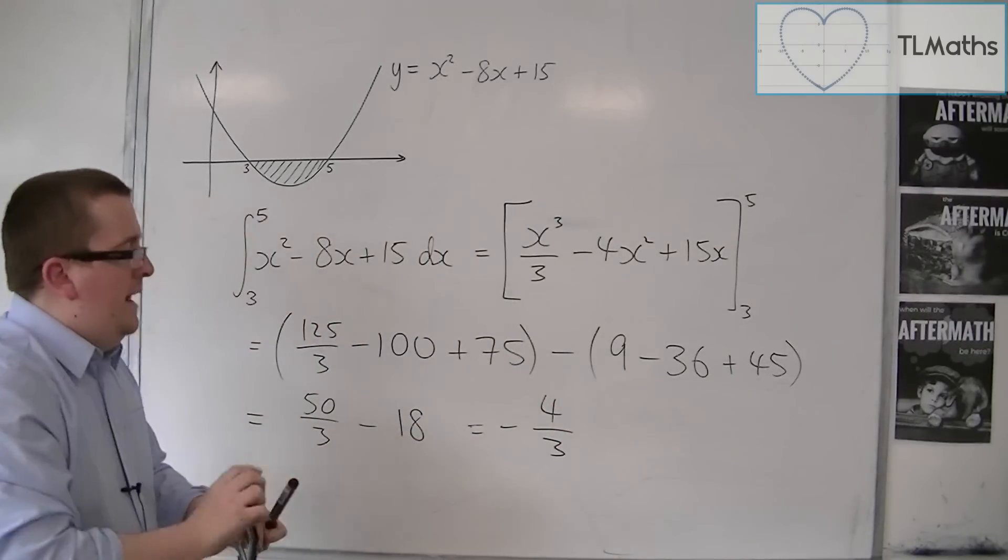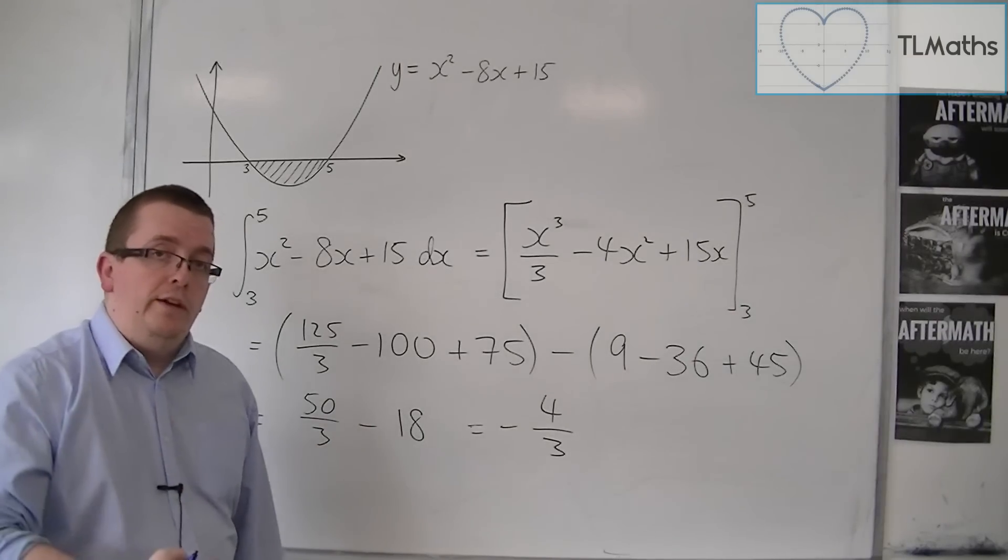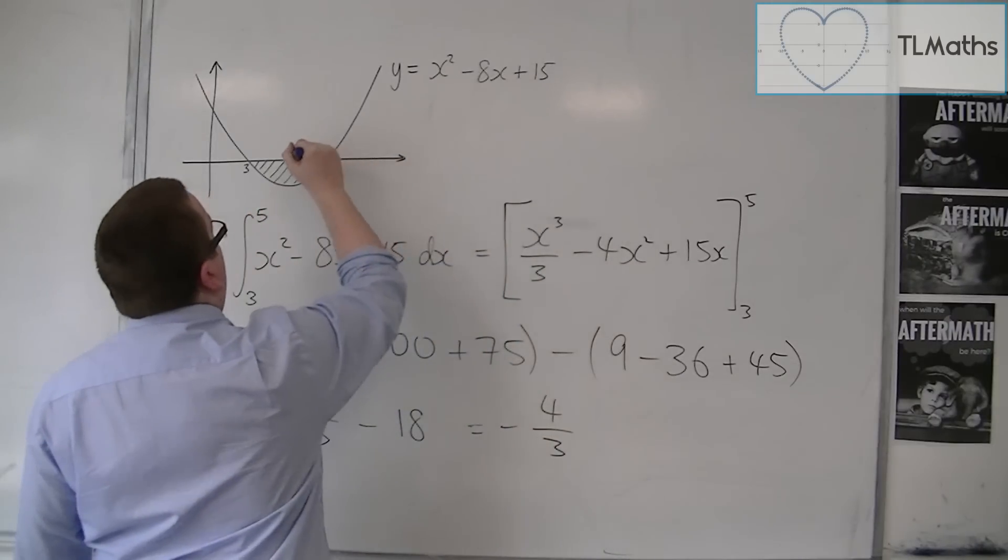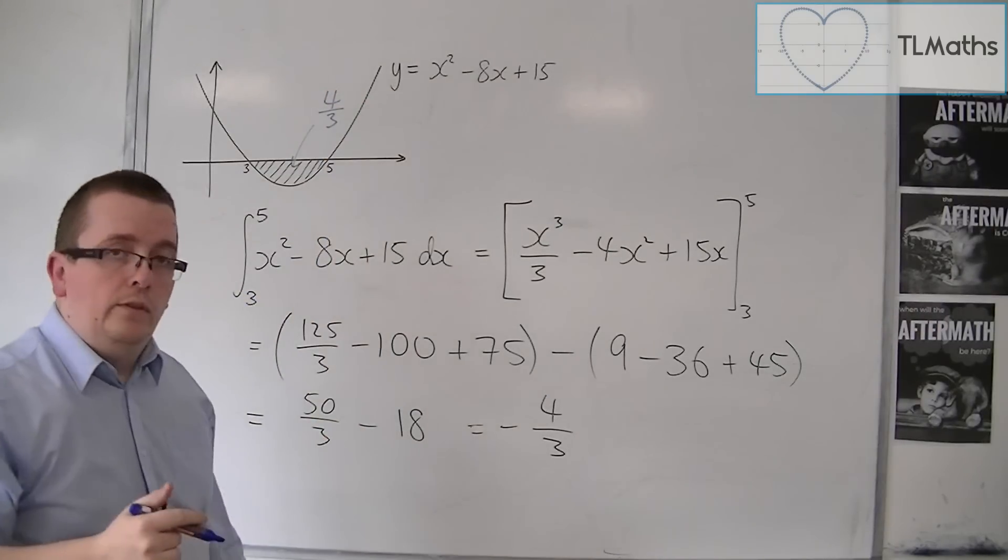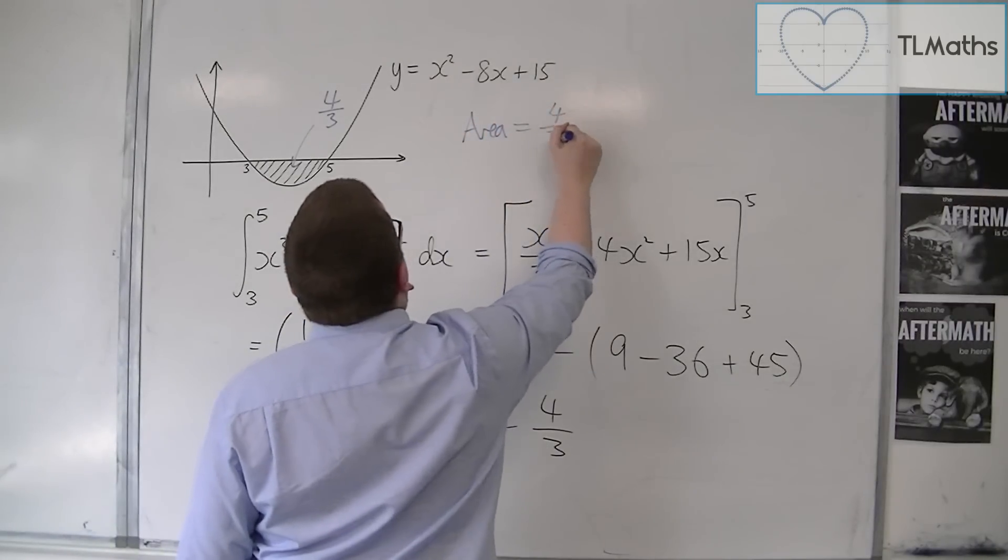Now, the area clearly isn't minus 4 thirds. The area has to be positive. So this area is equal to positive 4 thirds. So we can write area equals 4 thirds.